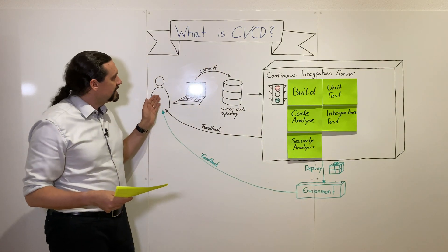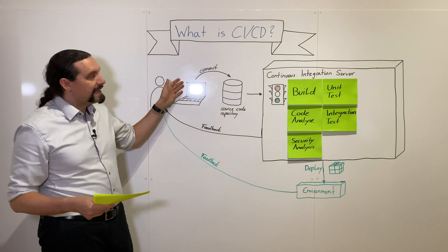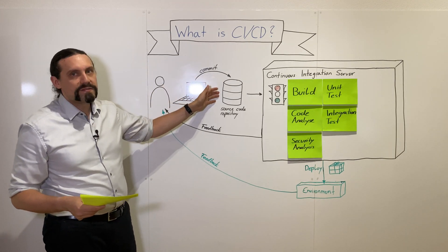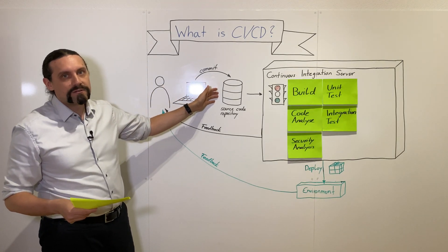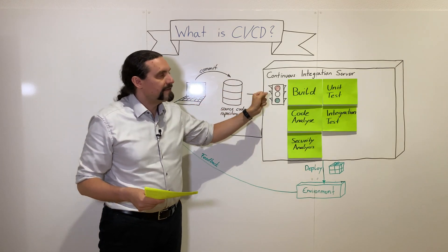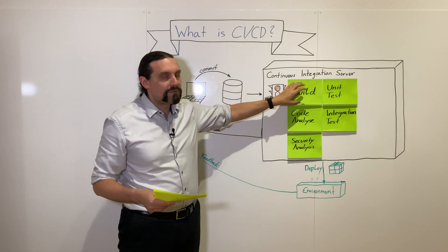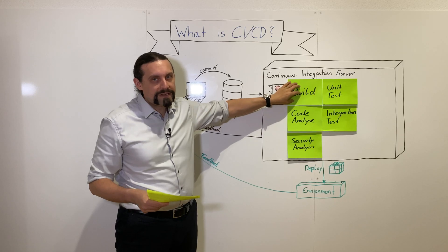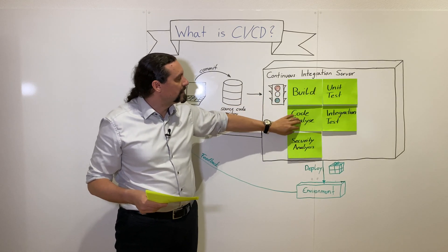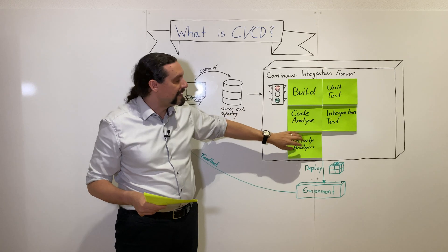With continuous integration, the developer is able to commit his source code to the source code repository, and the continuous integration will then take that source code, integrate it with the rest of the source code, build it, and do the code analysis on it.